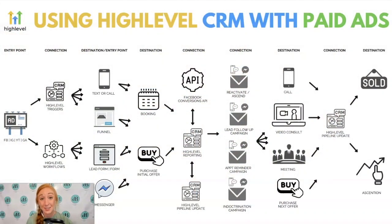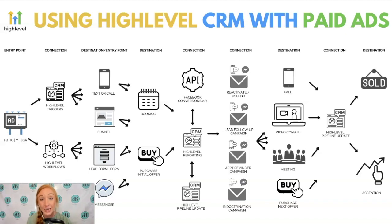My social marketing system is what I refer to as the EPCD system, and that stands for Entry Point, Connection, and Destination. Your entire social marketing system is just a mix of different entry points, different connections, and different destinations. I created this chart to really illustrate what this looks like so that you can better understand the system that you'll be creating either for your organic leads or through your paid advertising.